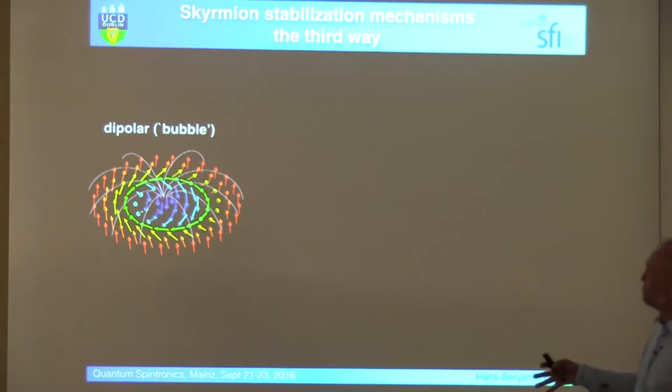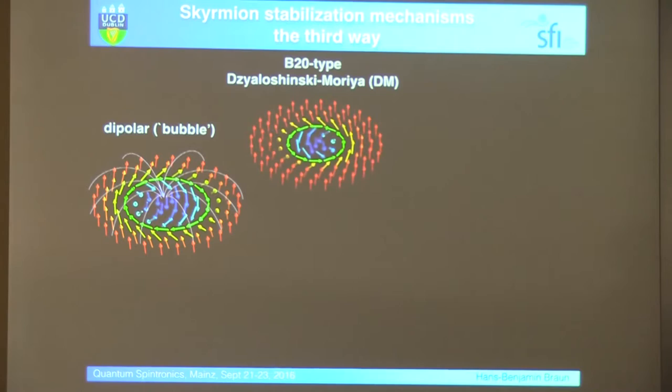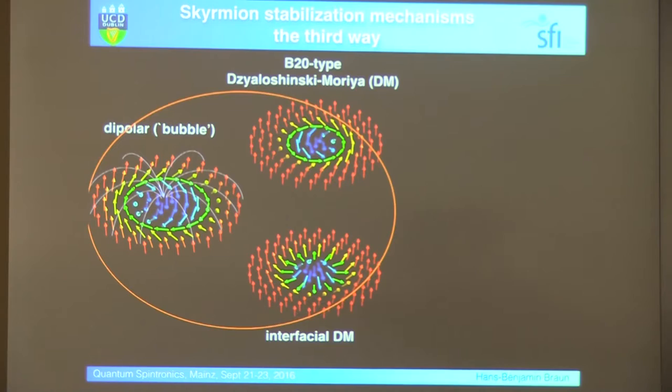So to summarize, the conventional system is, we have bubbles, they're usually large, we have DMI skyrmions, they're really tiny, and they're suitable for information storage, but actually, we really need to look at the whole thing.